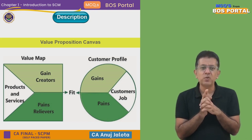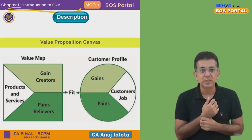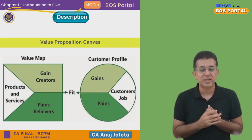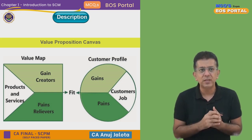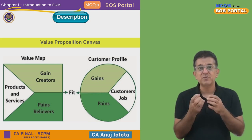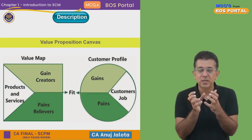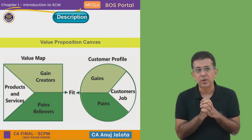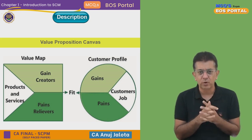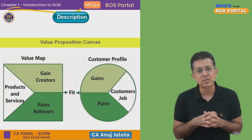Apart from that, as a customer when you purchase some product or service you are looking for some gains. For example, when using ClearTax to file a return, I'm looking for the payments to happen at that particular time with nothing else left for me to do. So pain relievers are those factors which relieve my pain, and gain creators are those things which help me get extra gains by purchasing the product or service. The left-hand side is all about products and services.